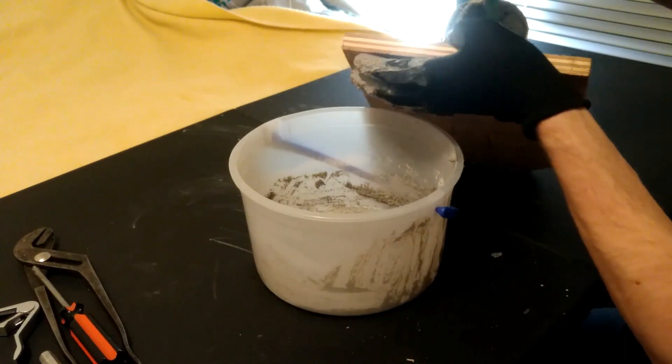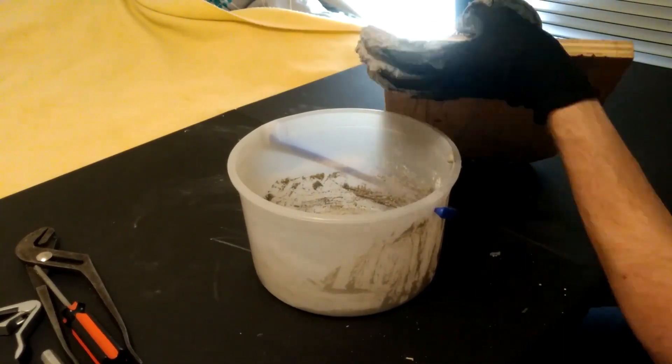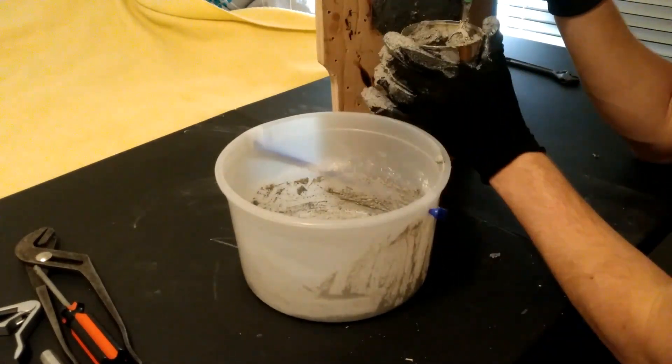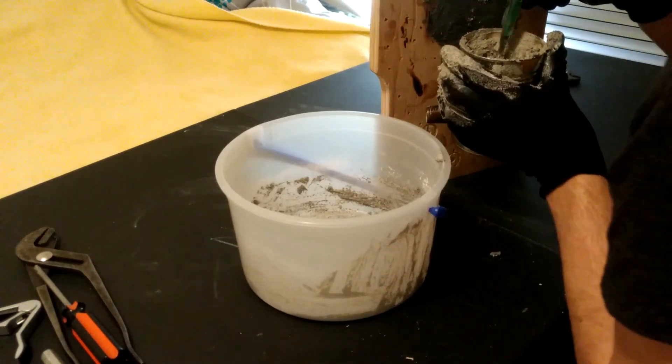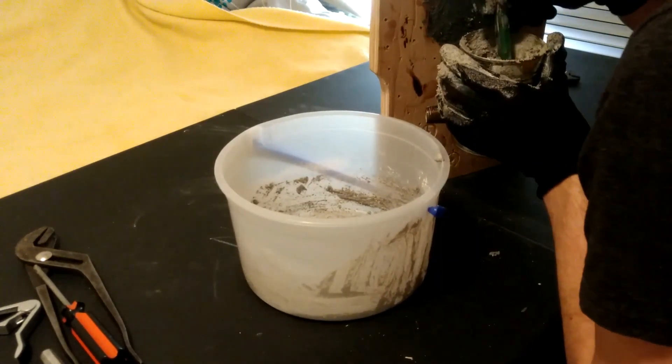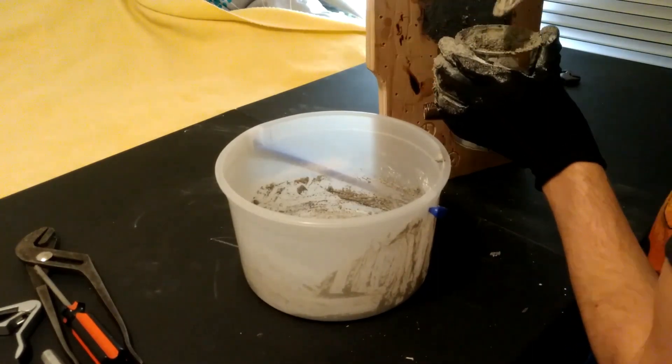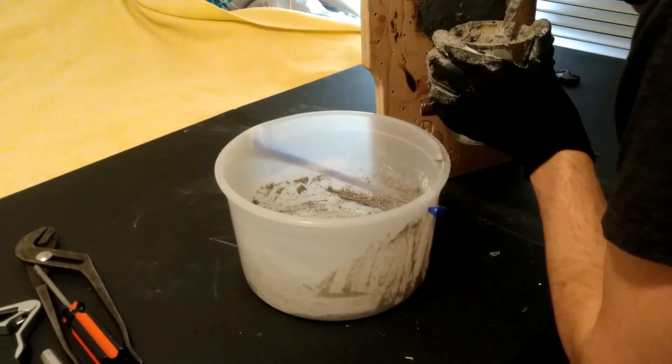I actually mixed up my plaster a little bit too thin. It was having trouble sticking to the walls at first, but as it set, it became easier to form. As you do this, you just want to take your time. Make sure you get a nice even coating. Any thin spots are going to allow the heat to get out more easily and that's going to hurt the effectiveness of the forge.